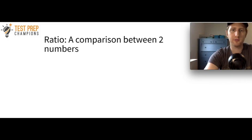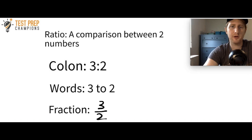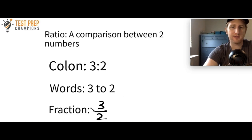Simply put, all a ratio is is a comparison between two different numbers or amounts. It's important to know that there are three different ways we can write a ratio: we can write them using a colon, just like this for the ratio three to two; we could also use words and write it three to two; and we could also write it as a fraction.